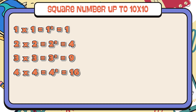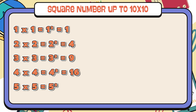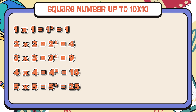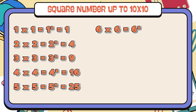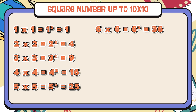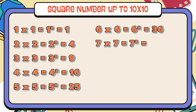5 times 5 is equals to 25, 5 squared is equals to 25. 6 times 6 is equals to 36, 6 squared is equals to 36. 7 times 7 is equals to 49, 7 squared is equals to 49.